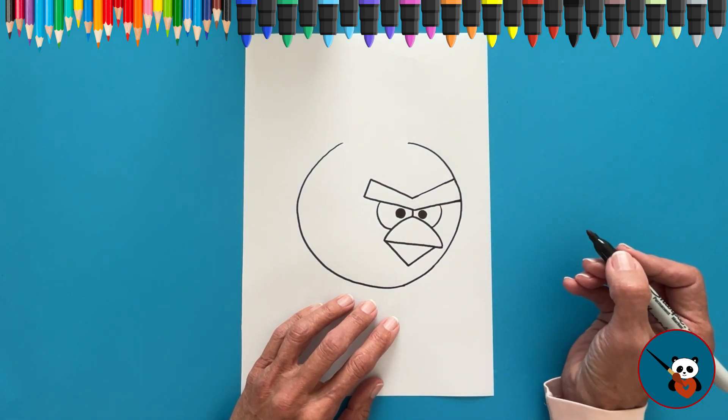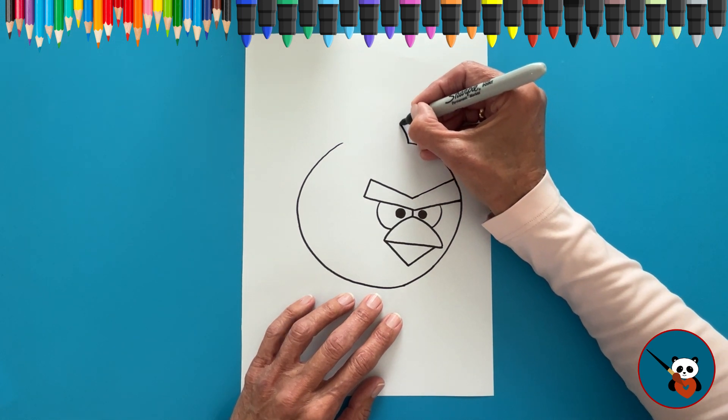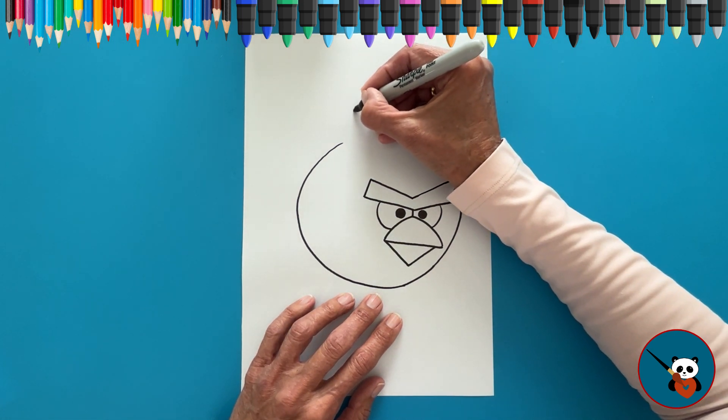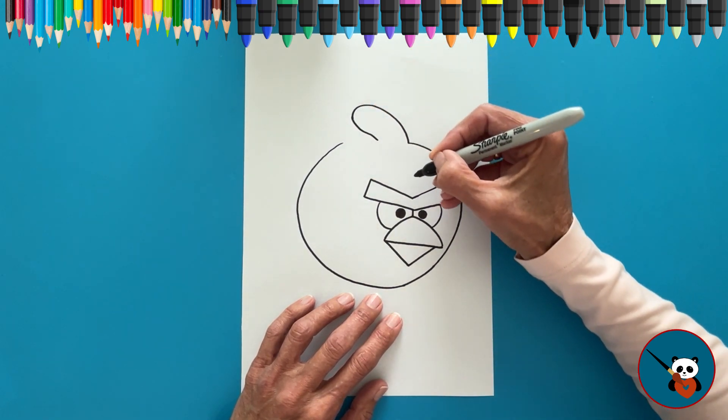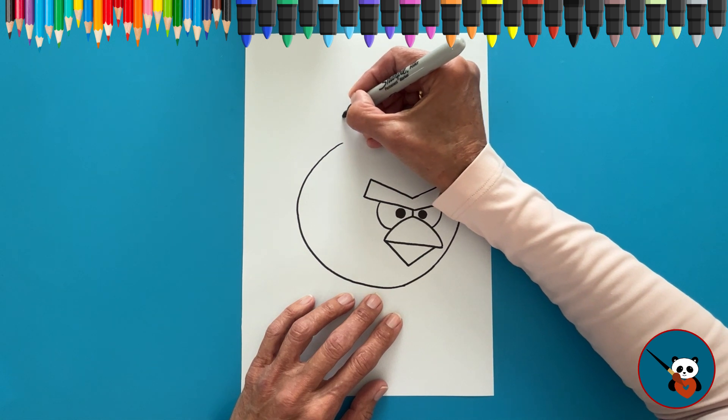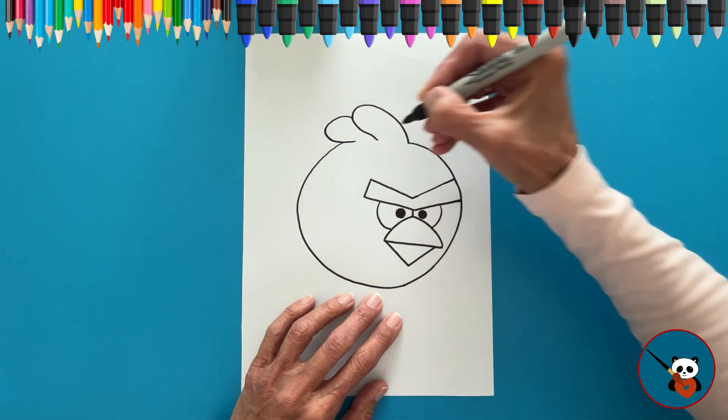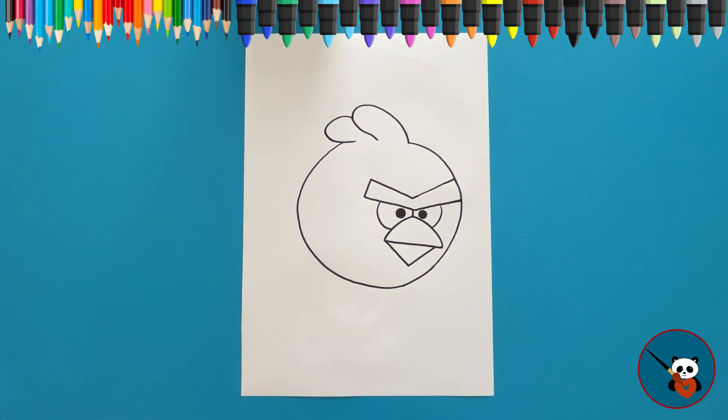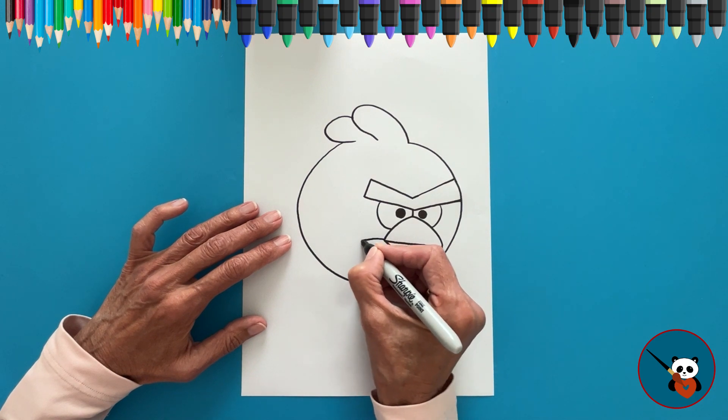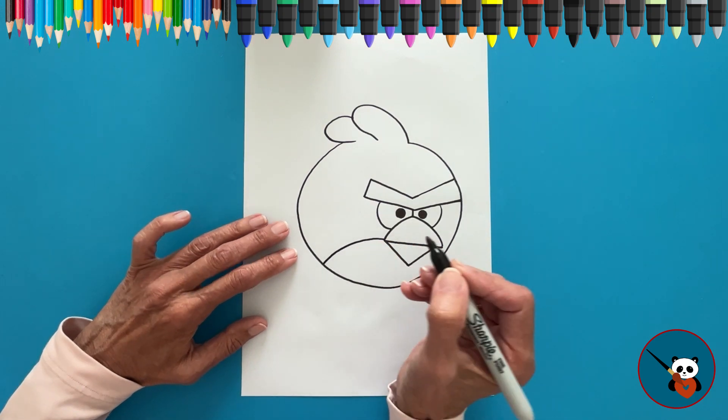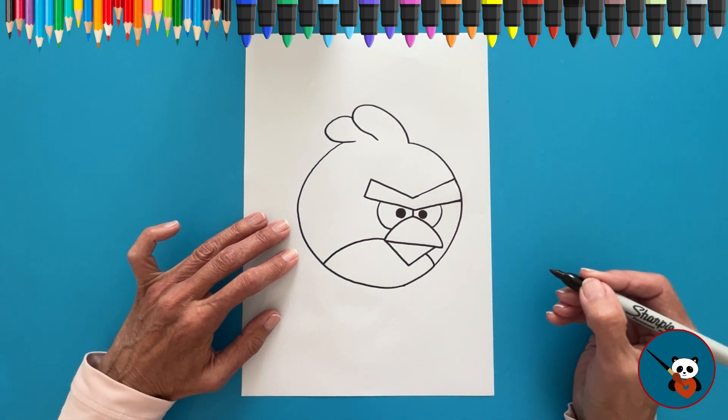Now, Red's feathery top. Make a curve upwards and swoop down, and make another curve on the side. Looking good! Now, make a line starting from the beak and curving to the side of the body. Complete this curve on the other side.